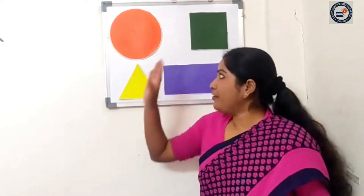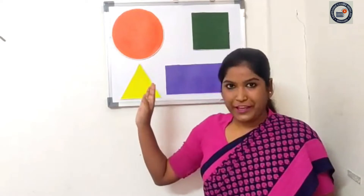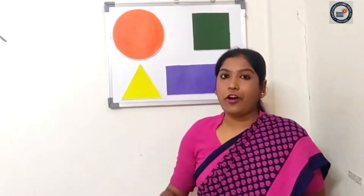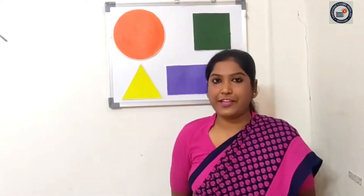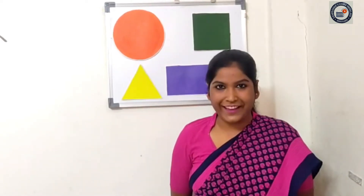So children, I will count from one to ten. Yes, within that what you have to do? You have to identify the image. Okay, what is the shape? I will show you and you have to tell it. Okay.